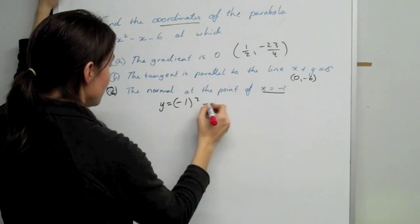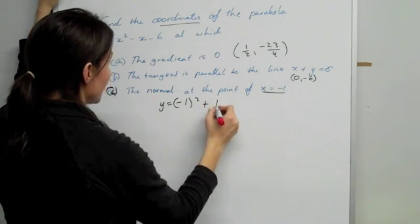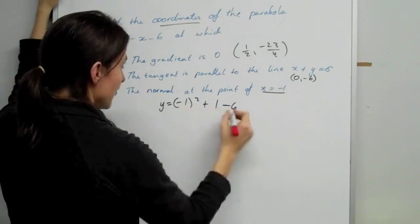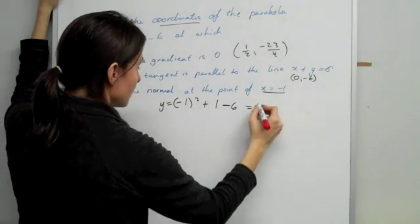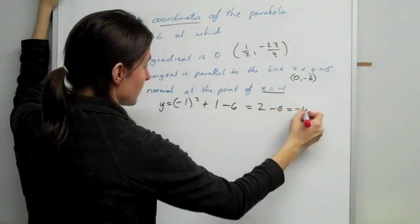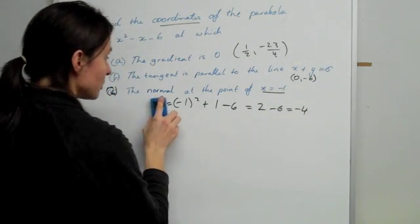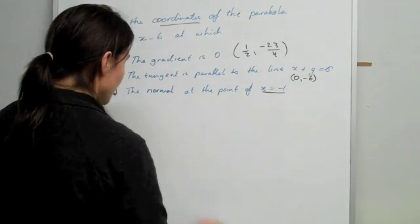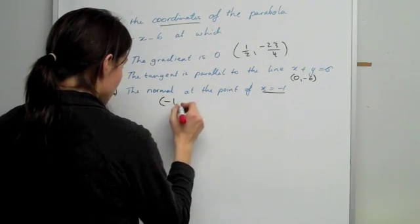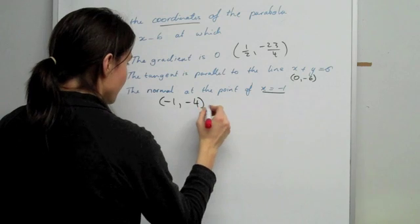(-1)² - or plus 1 - 6. That becomes 2 - 6 which is -4. So basically, you know that the coordinate at which your normal and your tangent go through is (-1, -4). This is the point of crossing.